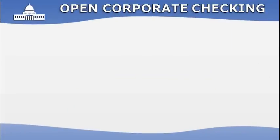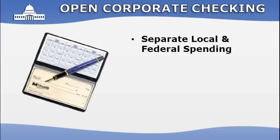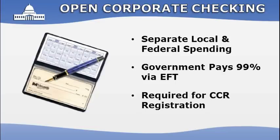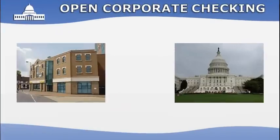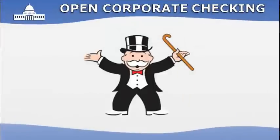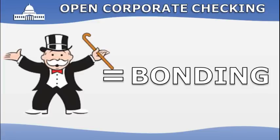Having a corporate checking or money market account before starting federal work is imperative. Not only does separating finances ensure maximum protection from your business structure, but the government pays contractors almost exclusively via EFT. Your EFT information is required for your CCR registration, and if filled out incorrectly any payment may be delayed. Keep all federal income and expenses in a separate account — this will help immensely when calculating overhead costs on change orders. Develop a good working relationship with your banker, as bonding is built upon reputation and a proven history of success.